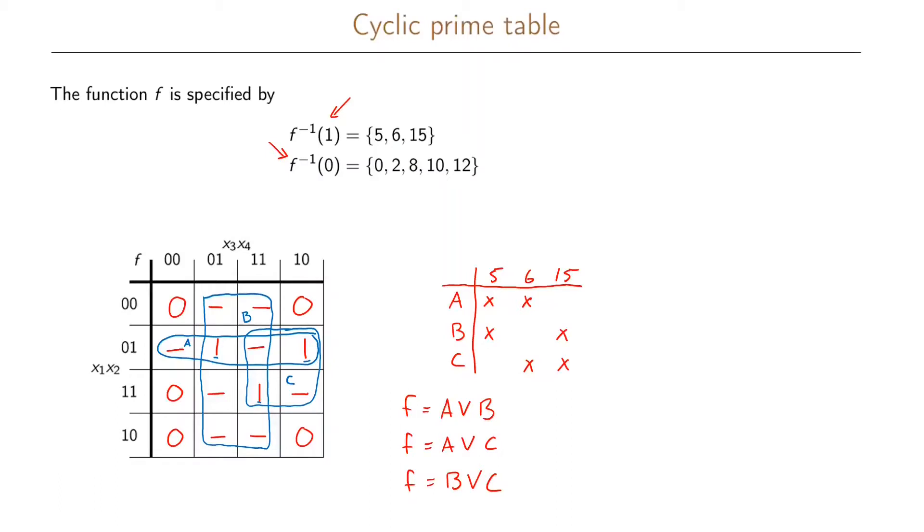And in this case, A or B will be x1 prime x2, so this is the prime implicant A, or B which is written as x4. A or C will be x1 prime x2 and C which is x2 x3. And B or C we can write as x4 or x2 x3.